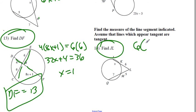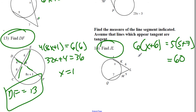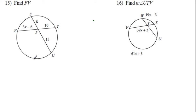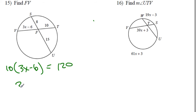For the right-side problem: 6(x + 6) = 5 × 12 = 60. Dividing both sides by 6 gives x + 6 = 10, so x = 4. Finding JL: if x = 4, then JL = 10. Next problem: 10(3x − 6) = 8 × 15 = 120. Solve for x and you're good to go.